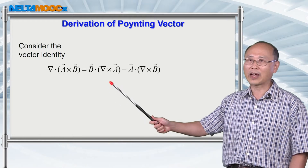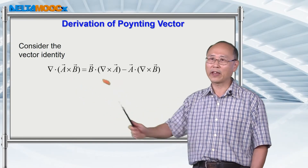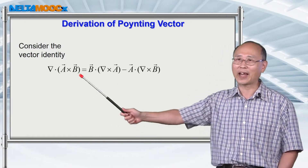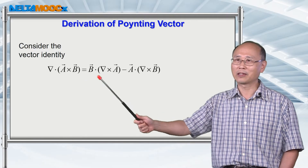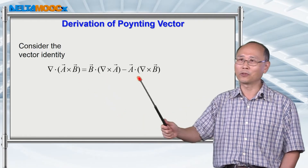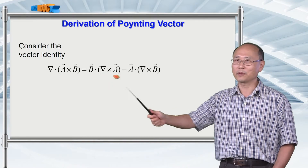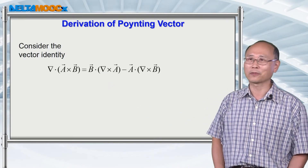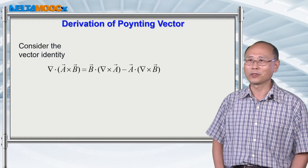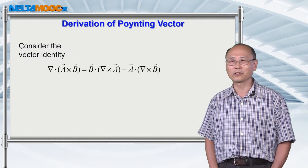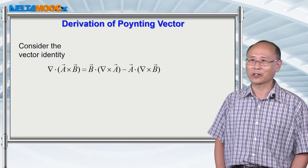Let's start with this vector identity. If you take the divergence of A cross B for two vectors in space, you can separate the calculation into two parts, similar to differentiation by parts. Be careful that there is a minus sign here, because when you perform the cross product or curl operation, the order of the calculation matters.